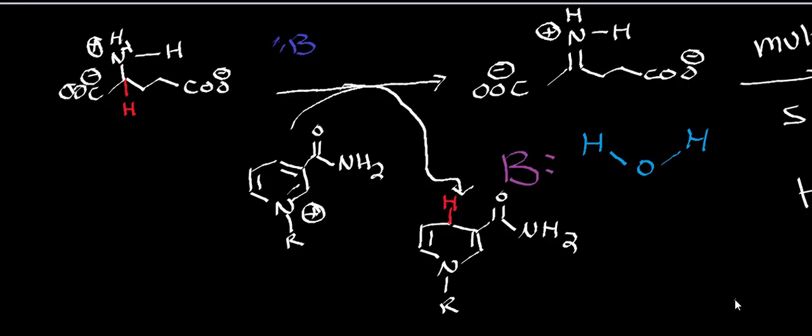That ammonia will be shuttled into the urea cycle where it will be activated by carbamoyl phosphate synthetase one, so it can ultimately be excreted as urea.